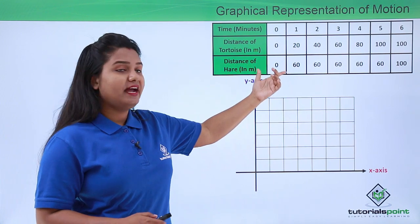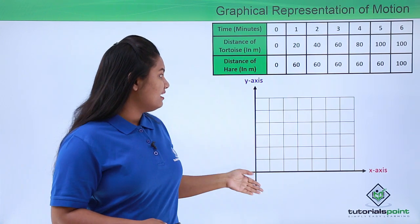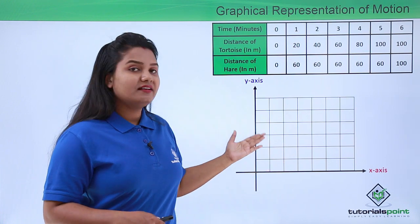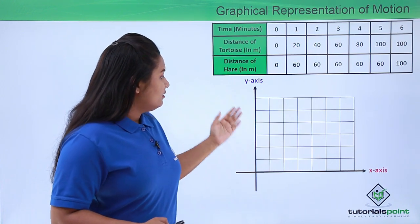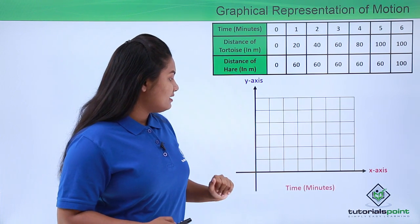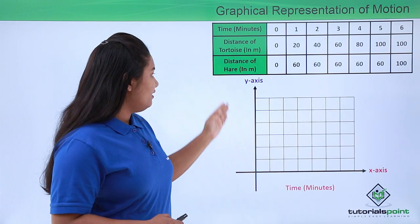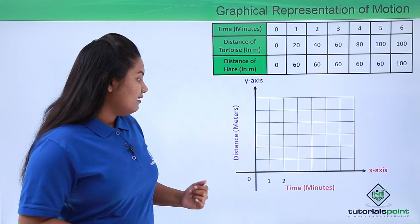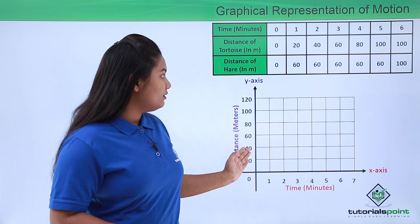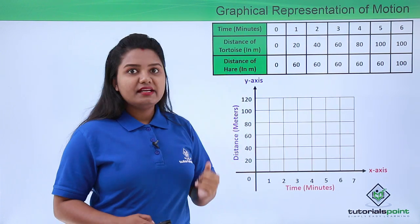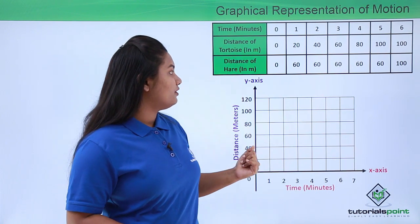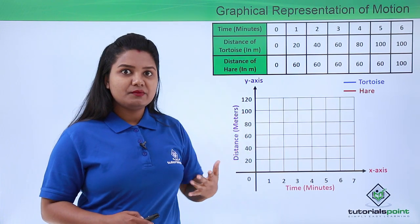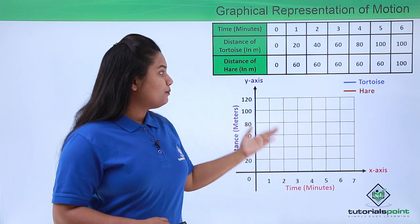We will be plotting this data as a graph. Here we have the data from earlier and a Cartesian plane where the x-axis and y-axis are marked. We will take time along the x-axis in terms of minutes and distance along the y-axis in terms of meters. For convenience we will use two colors — blue for the tortoise and red for the hare — so it will be easier to distinguish them later.